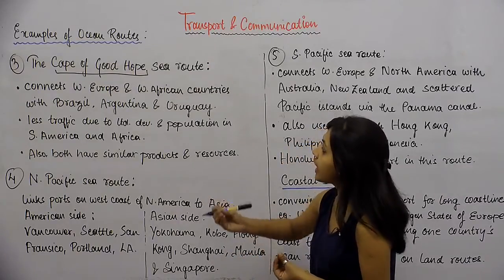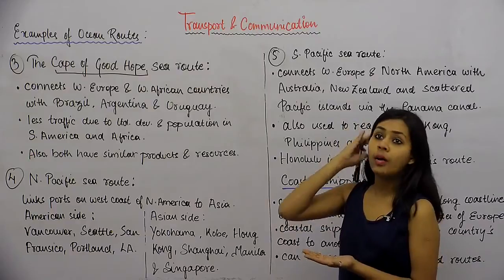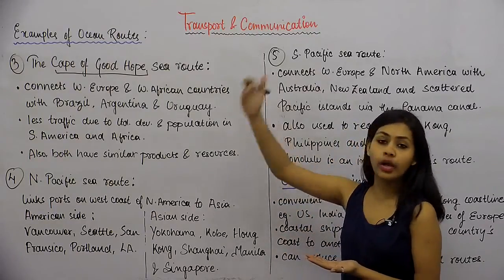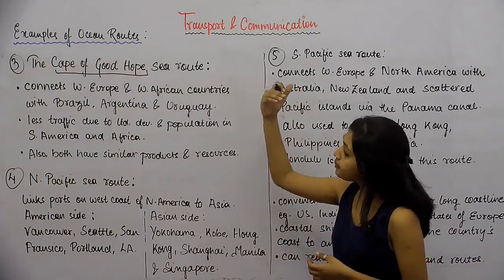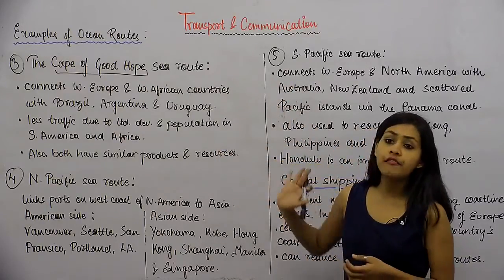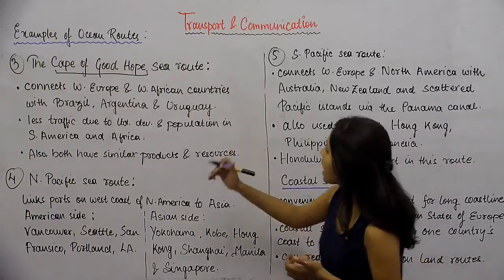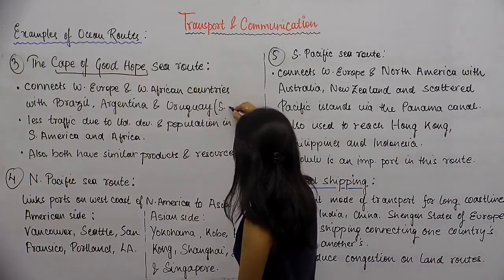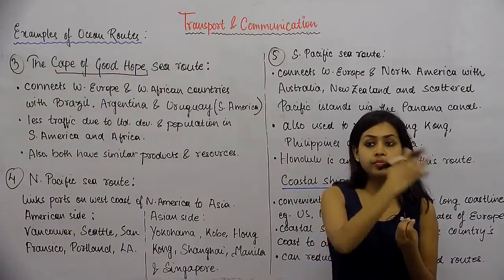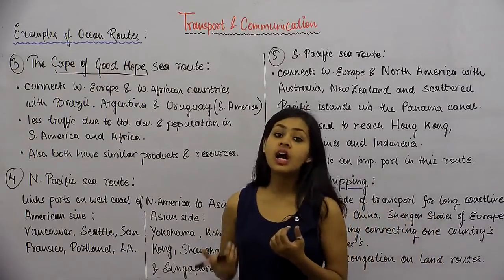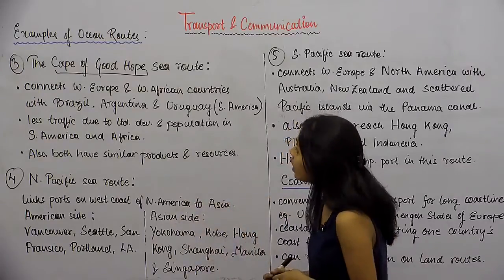This sea route connects countries of West Europe — countries like the UK, Britain, France, etc. — as well as West African countries. What it links with are countries of Latin America, also called South American countries. So Africa and South America are the two continents linked by this sea route.